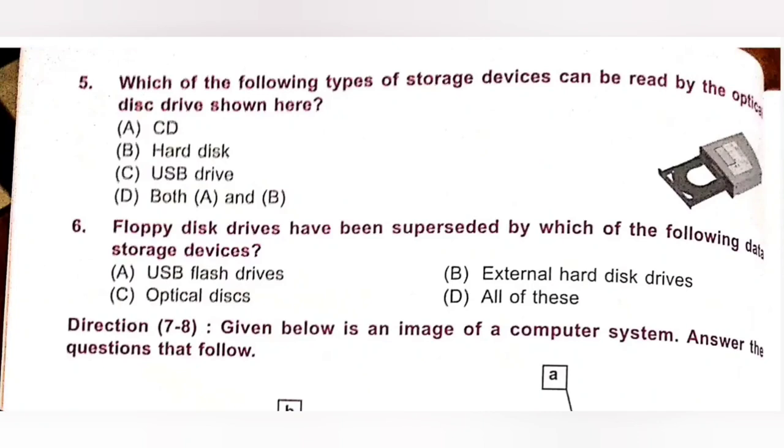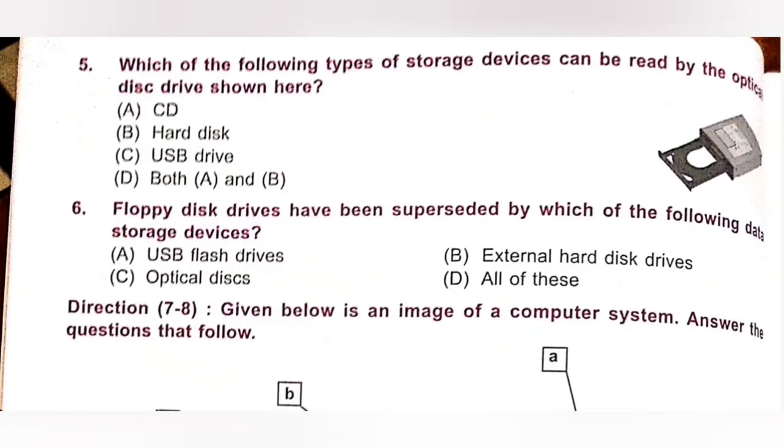Sixth. Floppy disk drives have been superseded by which of the following data storage devices? A. USB flash drive. B. External hard disk drive. C. Optical disk. D. All of these. So, floppy disk drives have been superseded by all of these data storage devices. Option D is the correct answer.